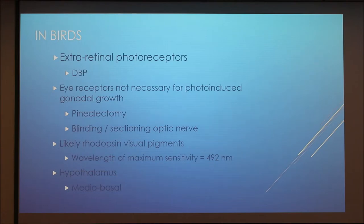That's because birds have extra retinal photoreceptors. Due to their location they are called deep brain photoreceptors or DBPs. So birds can absorb light in their brain. Because of this additional pathway in birds, the eye receptors are not necessary for photoinduced gonadal growth. This is supported by studies where birds were either pinealectomized or blinded via sectioning of the optic nerve. Based on what we know of the retinal pathway, we can see that this would prevent the necessary hormones from being released. However, the birds in these studies were still able to develop gonads and were even able to have peak gonadal activity.